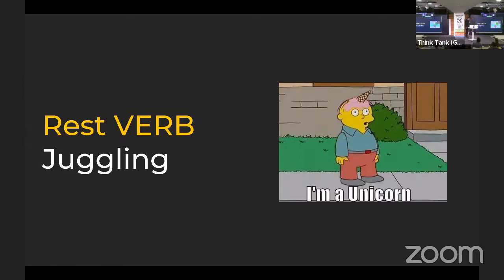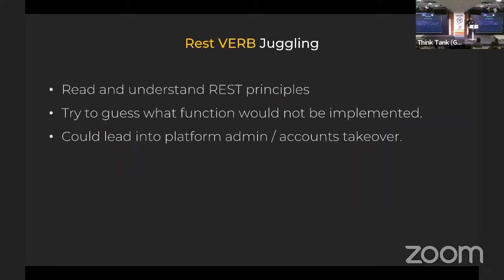REST verb juggling — my least favorite because it usually doesn't give fruitful results. It's when you take a POST request in Burp or ZAP and change it to PUT, DELETE, or something else to see the results. Read and understand all the REST principles — they're really interesting. Try to guess what functions would not be implemented.